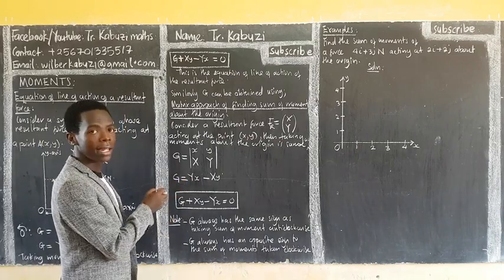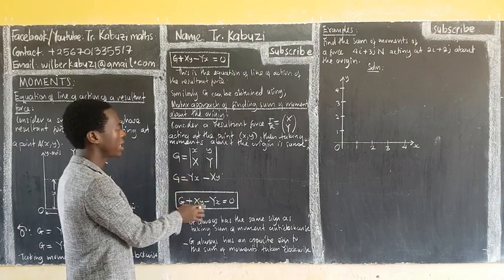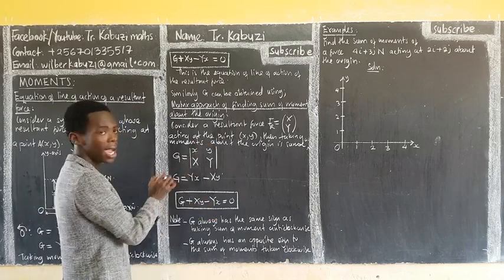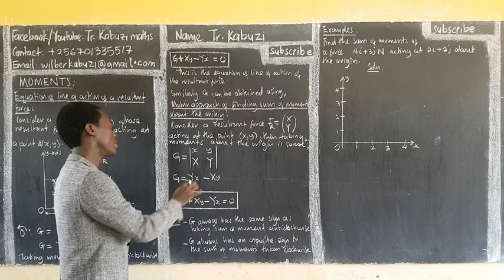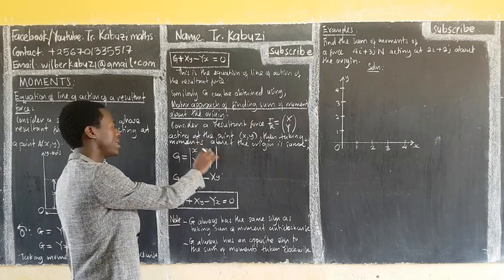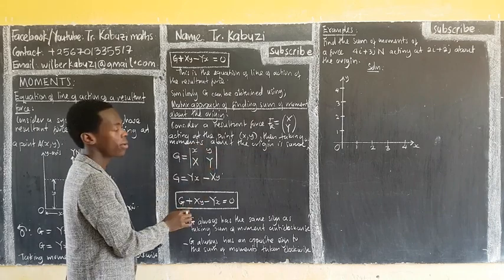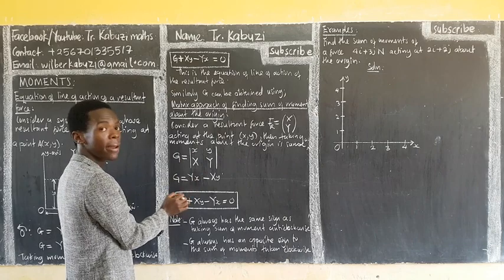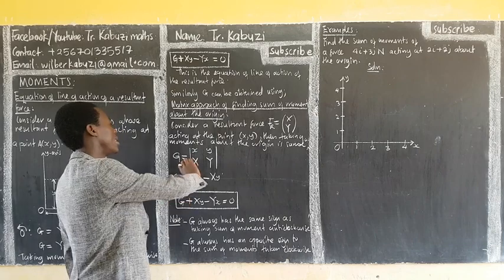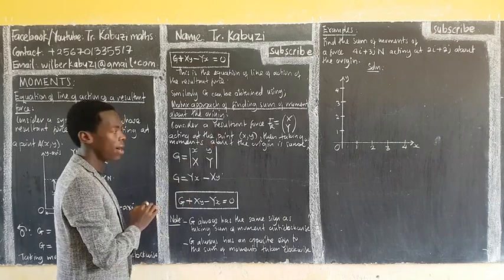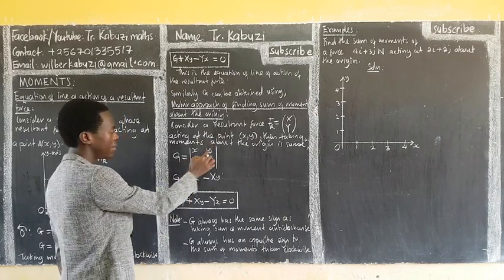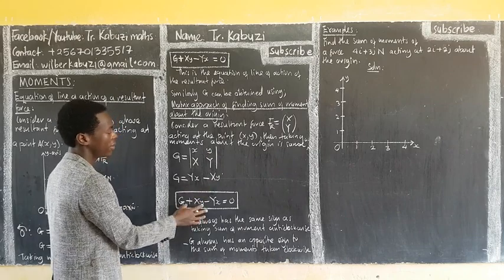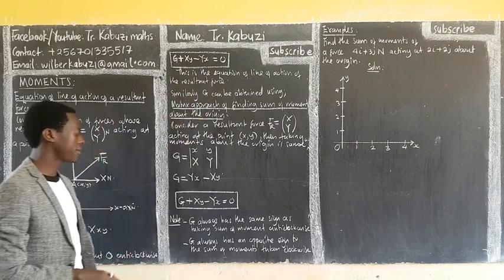You know how we get the determinant of this matrix. We get the product of elements in the major diagonal, then minus the product of elements in the minor diagonal. When we take this to the other side, we end up with the same equation as before.